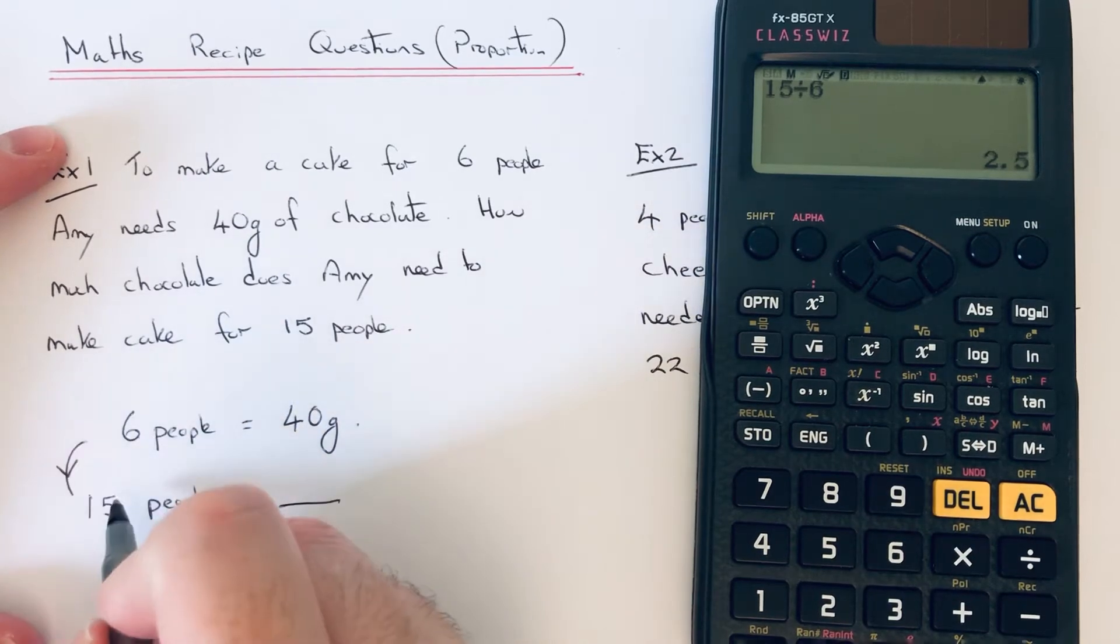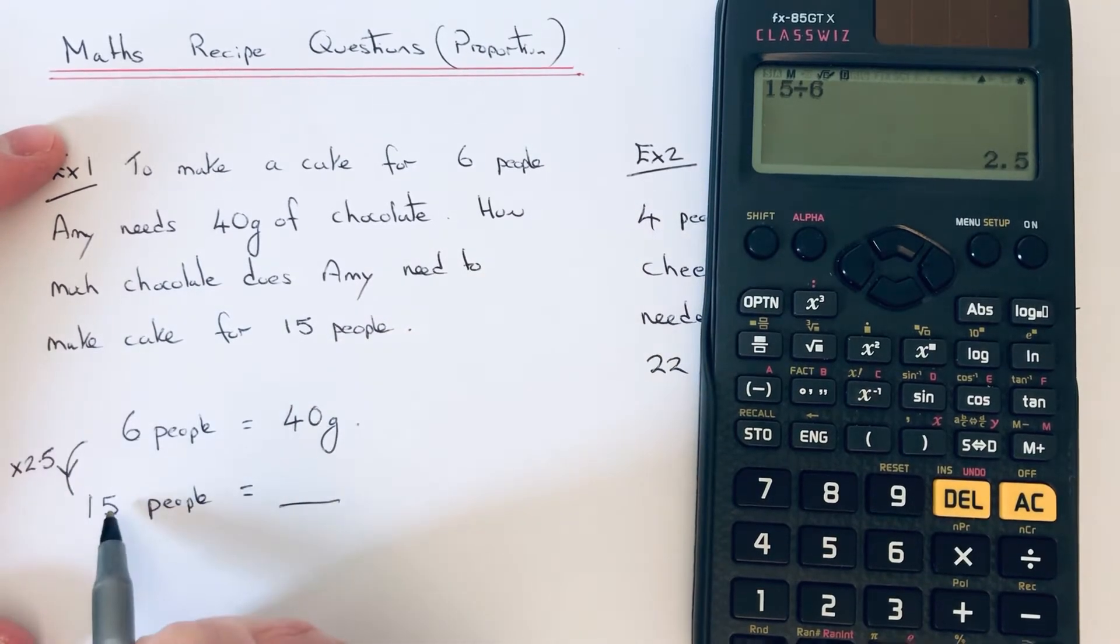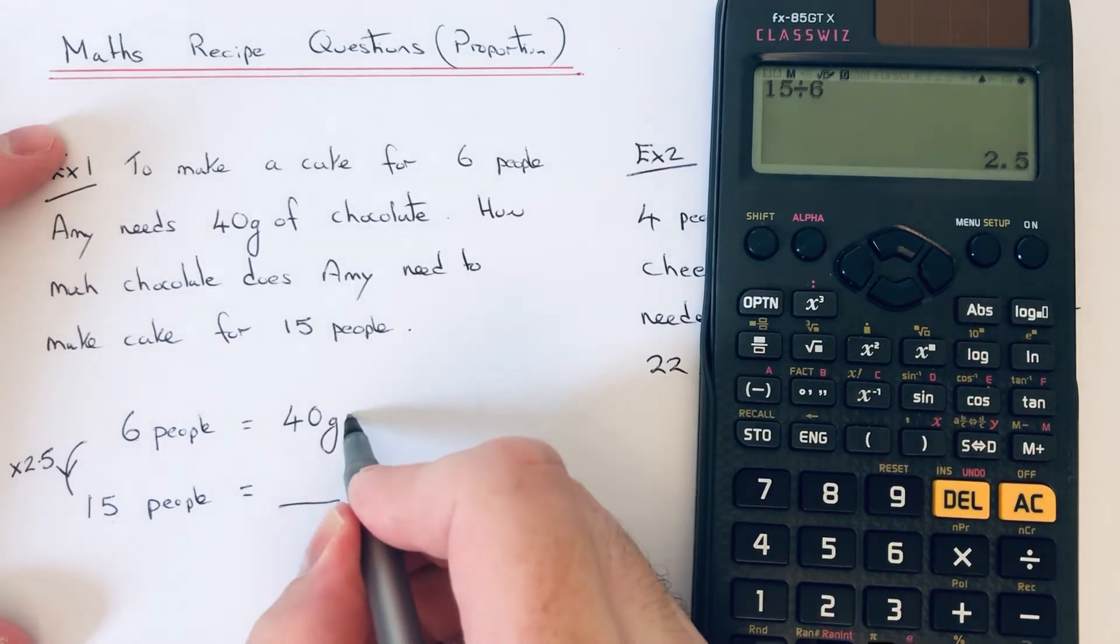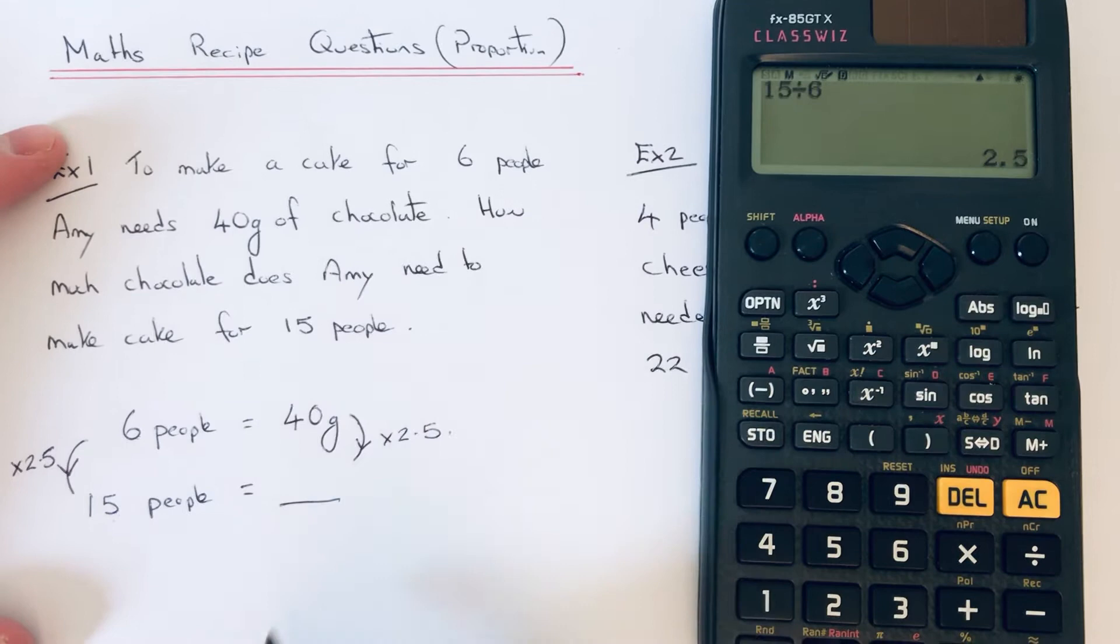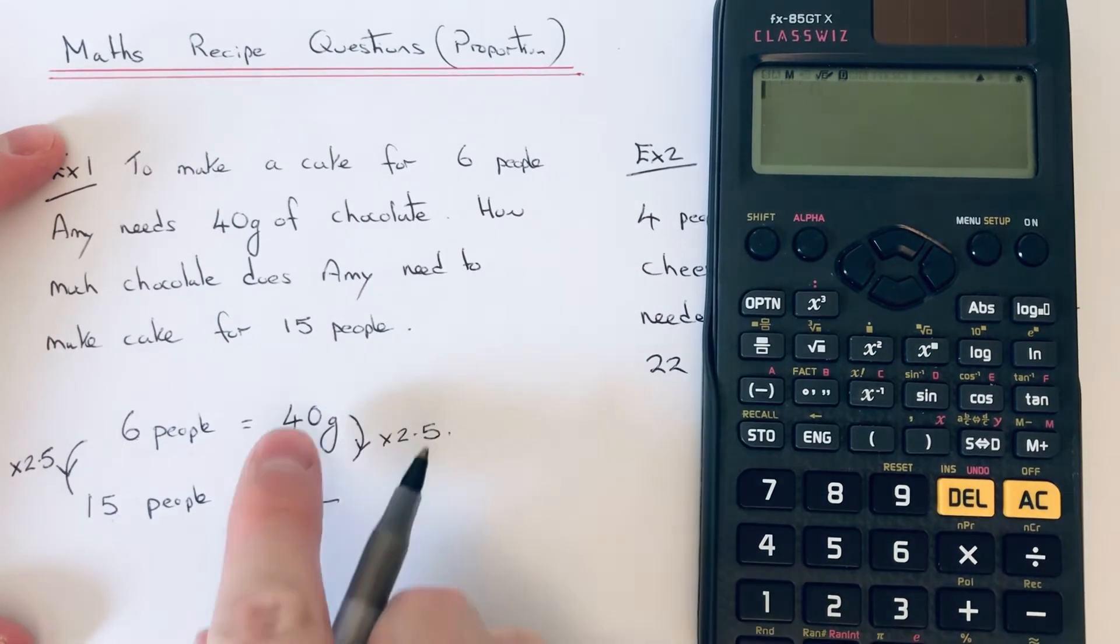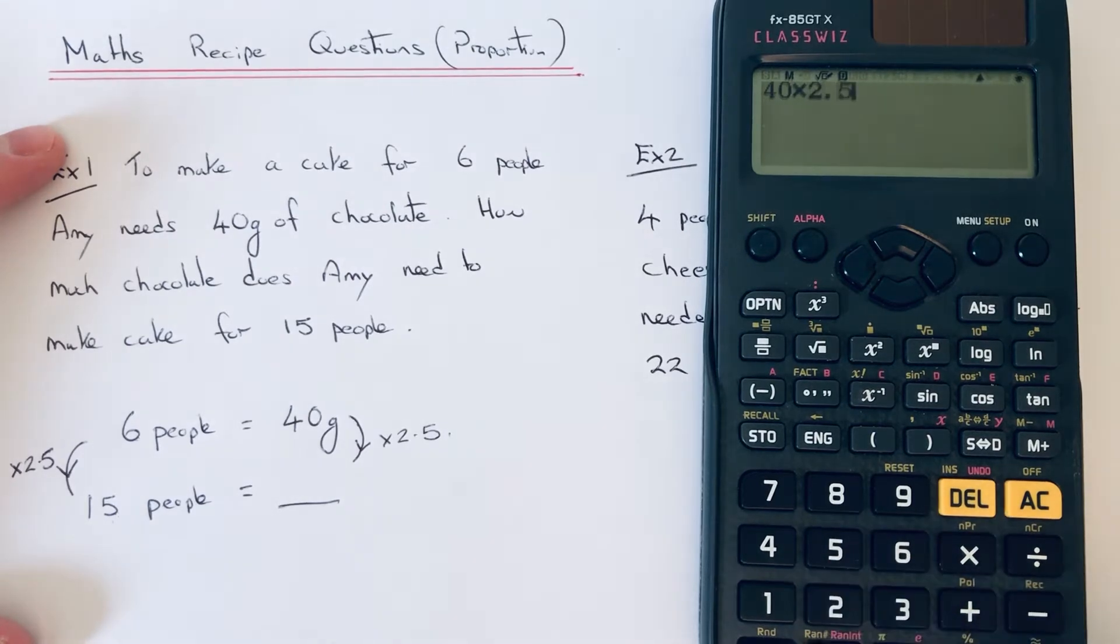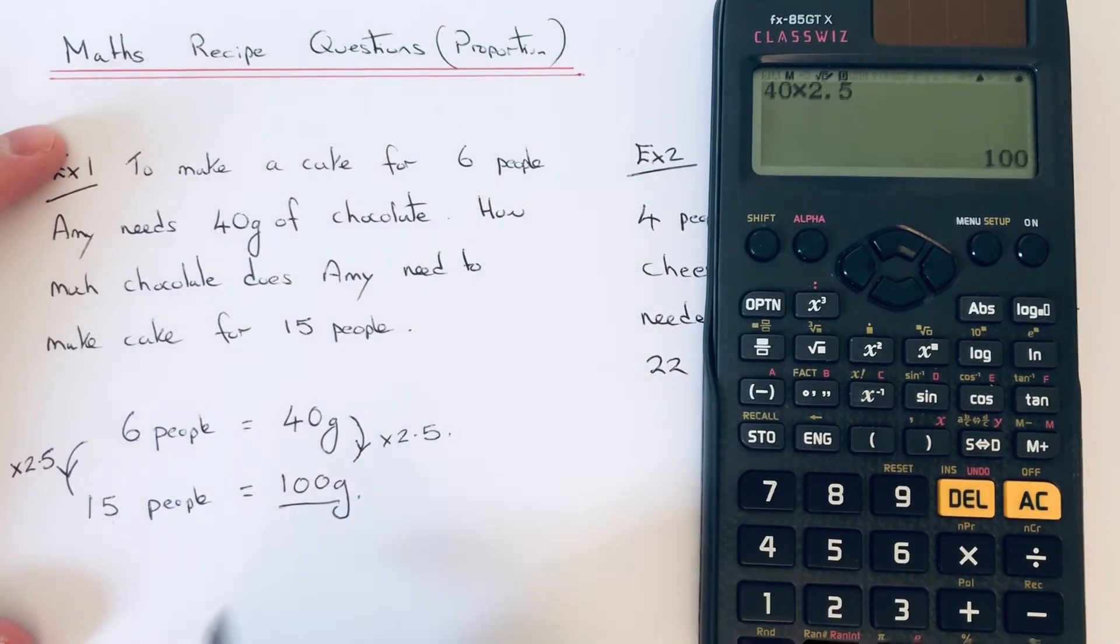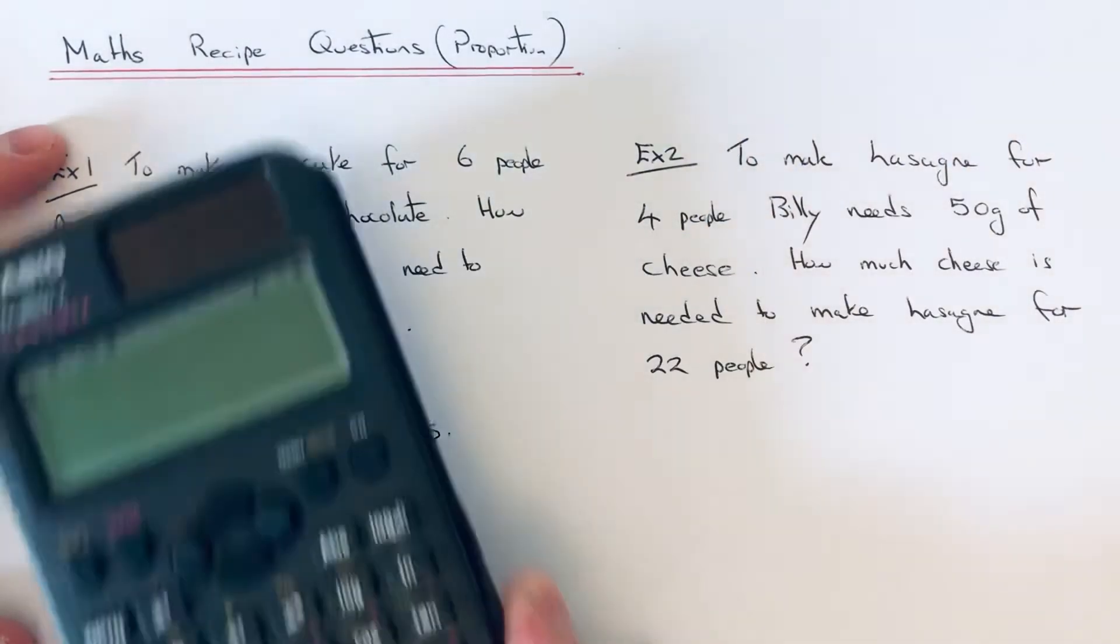So if this number here is 2.5 times bigger, then the other side will also be 2.5 times bigger. So we just need to now do 40 times 2.5, and our answer is 100 grams of chocolate. So let's have a look at the second example then.